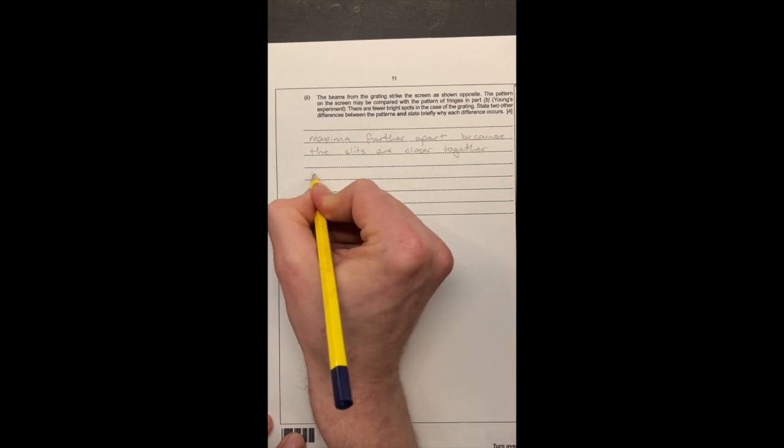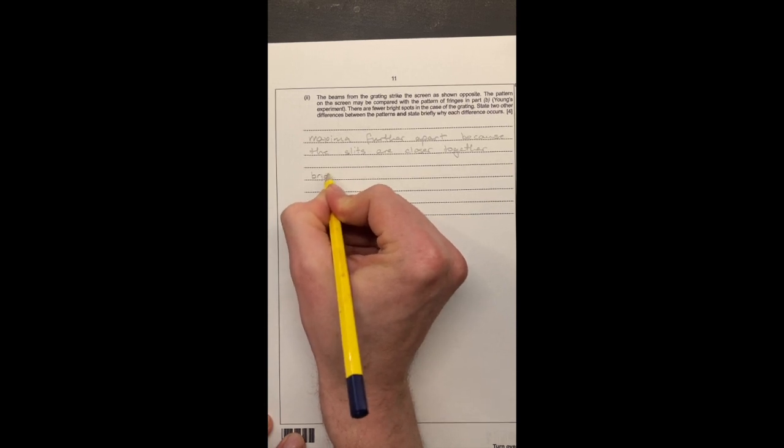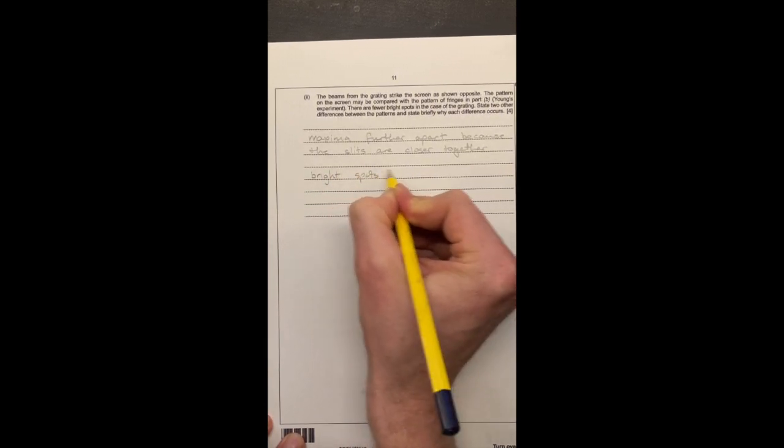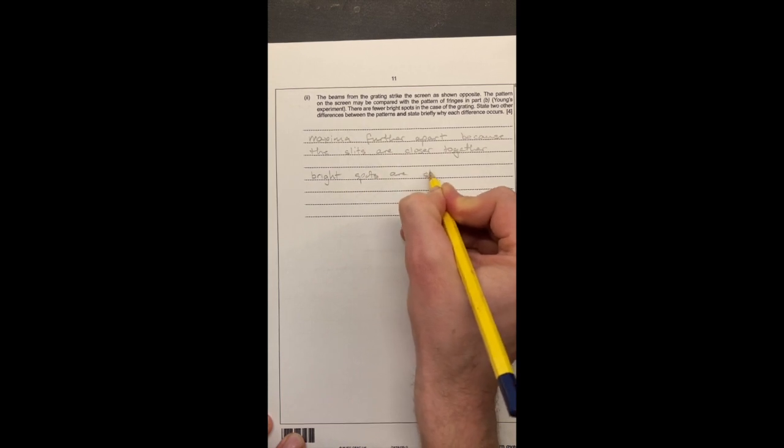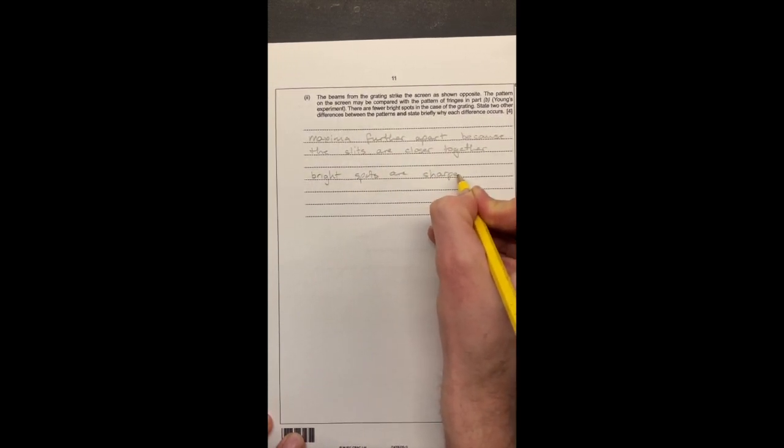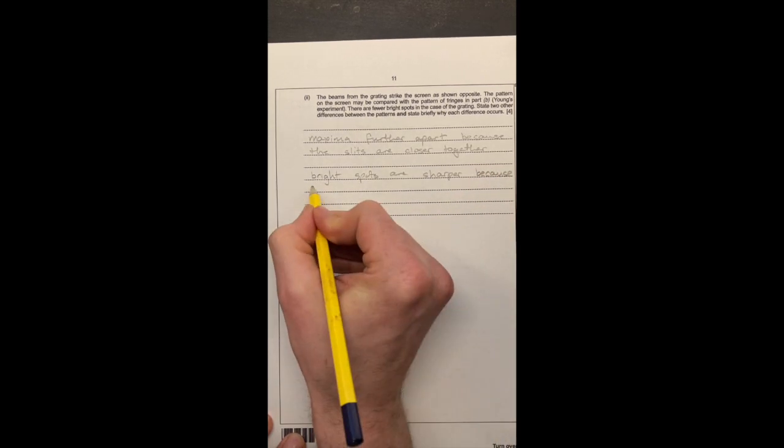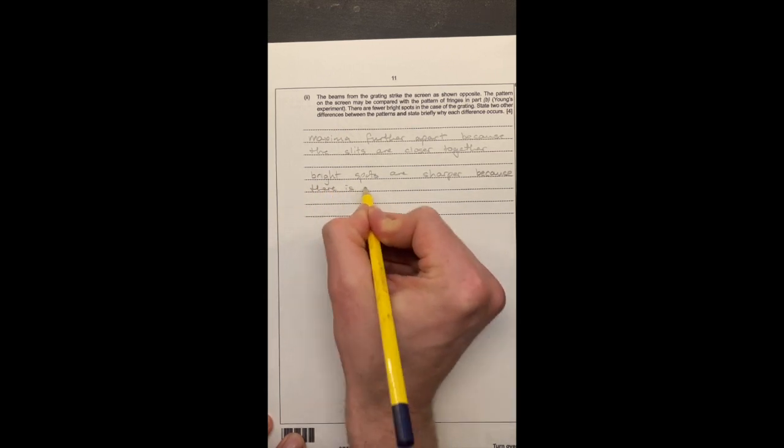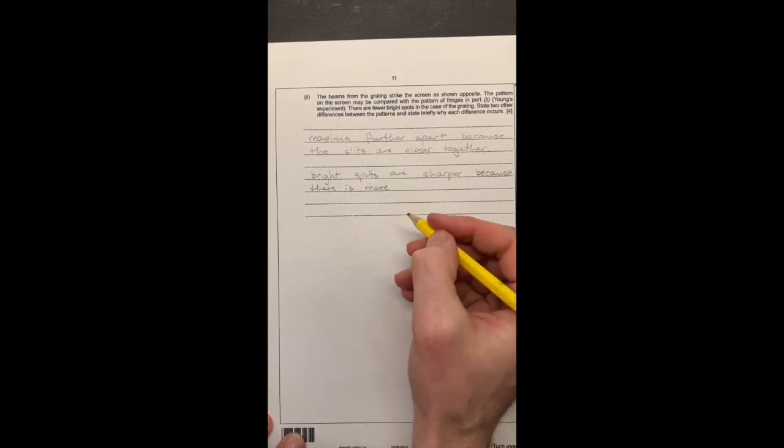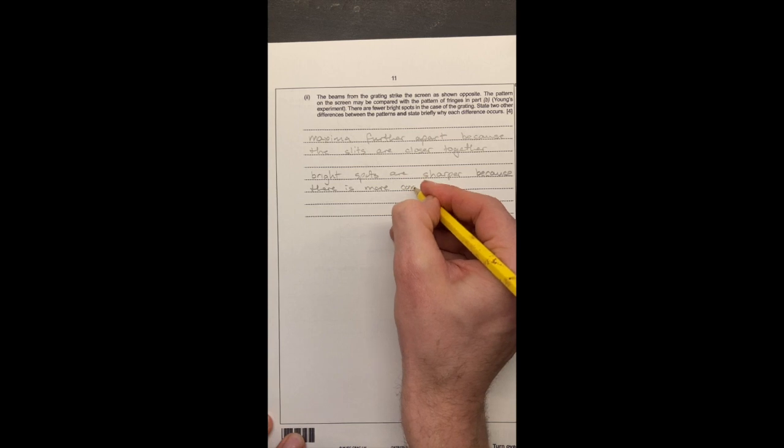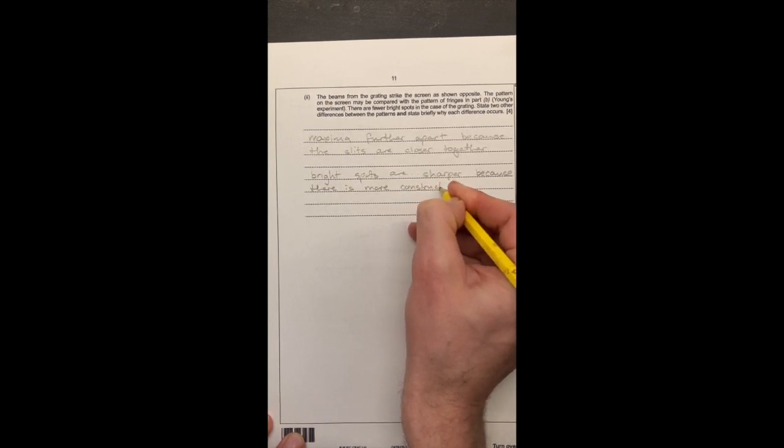There's another one, the bright spots, or maxima, are sharper, or sharper, or smaller maybe, or better defined, because what you've got is a greater overall, there is more, so there's a greater overall, what would you say, I'm trying to think now, there's more constructive interference, so you get more constructive and more destructive interference, so you get a clearer pattern at the end, because you've got more slits basically.